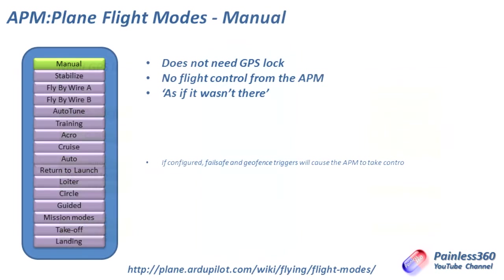The exception is circle, where it will basically just do big circles in the sky — a useful feature if you ever have a GPS problem. You can pop it into circle and give yourself time to figure out what to do next. Manual mode is the easiest to talk about — the APM doesn't really do anything. It's as though the servos were directly connected to the receiver, and the craft behaves just as it did before you installed the APM. APM is still there for things like fail safe and geofence triggers, so if the plane gets too far away or you have a radio problem, it will take over and fly back to the launch position.